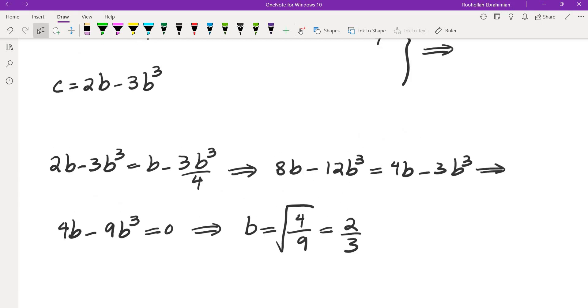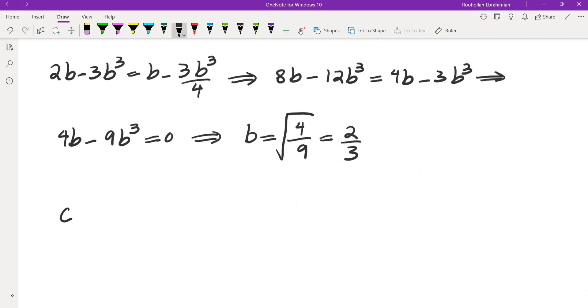But the question was asking us to find c. c is 2b minus 3b cubed. So this is equal to 2 times 2 thirds minus 3 times 8 over 27.